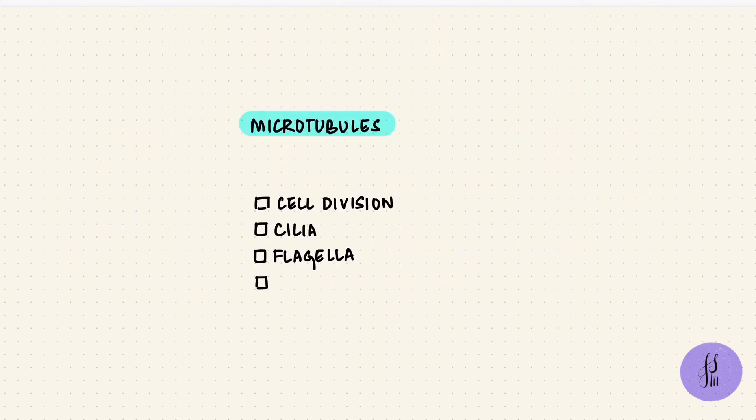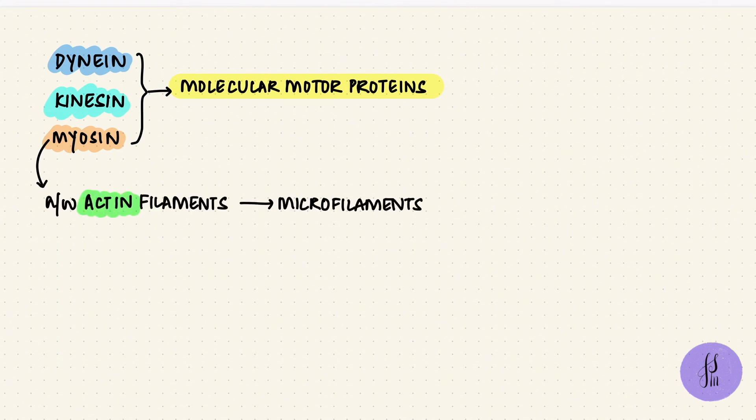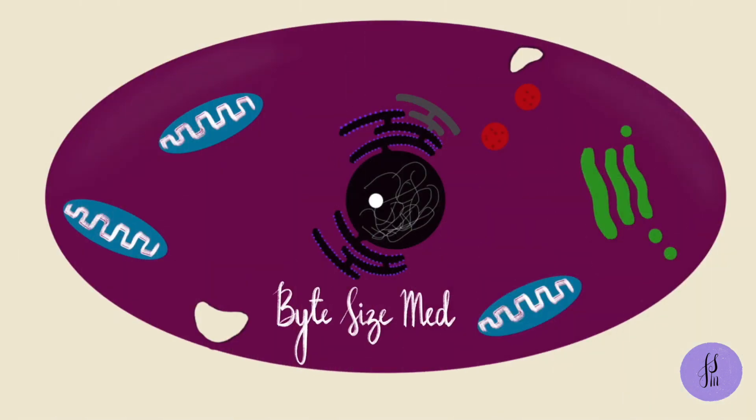So microtubules help with intracellular transport—they have a lot of functions, all of it in addition to providing structural support to the cell. Like kinesin and dynein, there is a third family of molecular motor proteins: myosin. These are usually associated with actin filaments—you know, actin and myosin. Actin filaments are microfilaments. That's our next group, so we'll be talking about microfilaments and intermediate filaments in part two. I hope this video helped you. If it did, give it a thumbs up and subscribe to my channel. Thanks for watching and I'll see you in the next one.